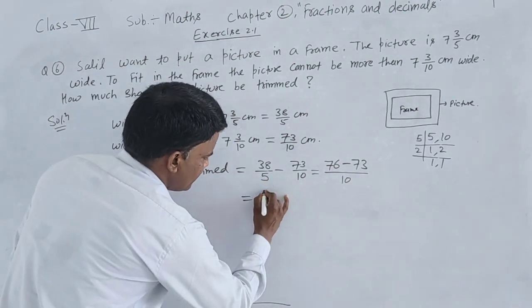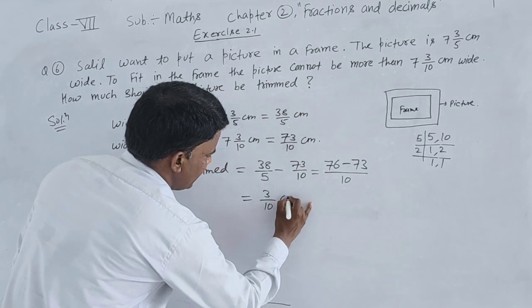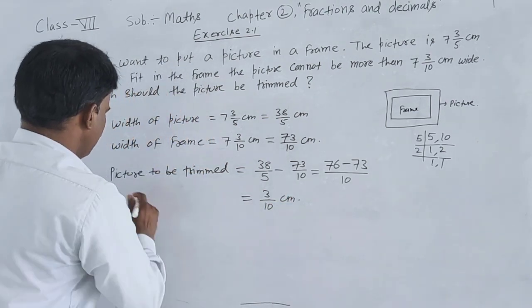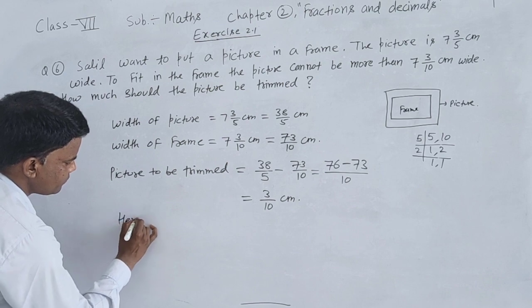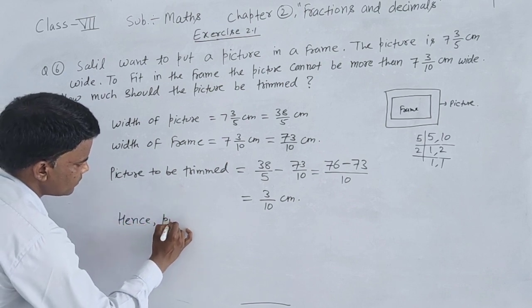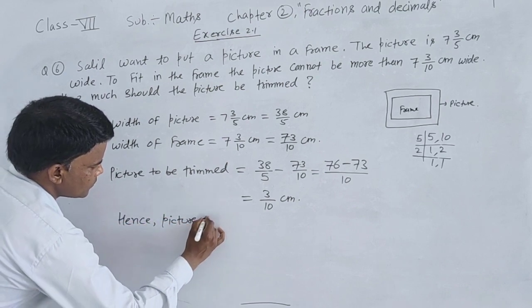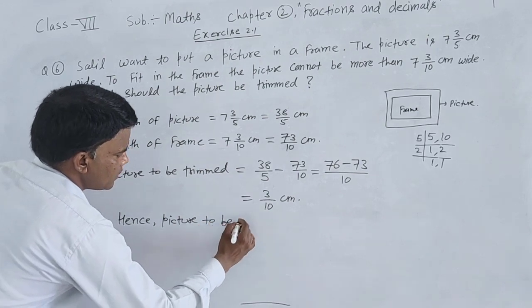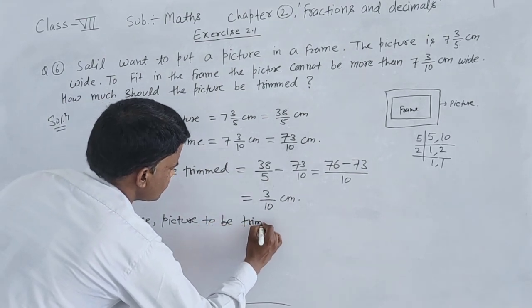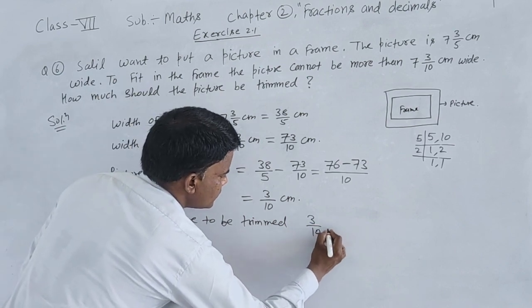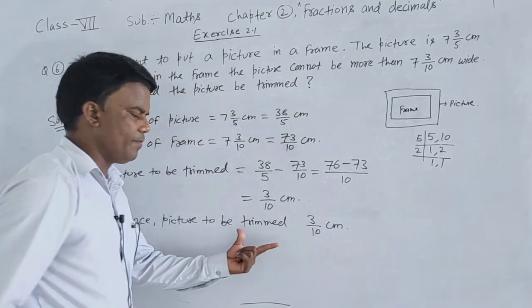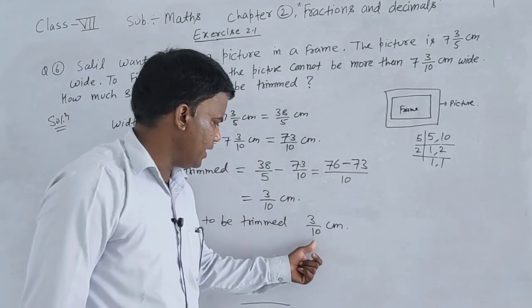Now 76/10 minus 73/10 equals 3/10. So the picture should be trimmed by 3/10 cm.